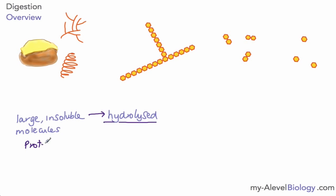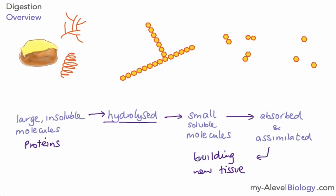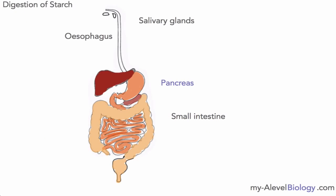Large insoluble molecules — and this can be not just starch and carbohydrates but also proteins, which are long-chain molecules — are hydrolyzed, meaning broken down into small soluble molecules. These can then be absorbed into the body and assimilated by the body. These are two important keywords: absorption is taking it into the body, whereas assimilation means actually building it into the body — building new tissue that becomes part of the body. So the overall process of digestion is to convert large insoluble molecules by hydrolysis into small soluble molecules which can be absorbed and assimilated.